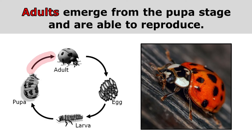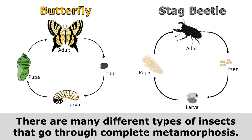Adults emerge from the pupa stage and are able to reproduce, and that starts the cycle all over again. There are many different types of insects that go through complete metamorphosis. Even though the butterfly and the stag beetle look very different, they go through very similar stages: the adult lays eggs, the eggs hatch into larvae, the larvae go through a pupa stage, and then an adult emerges from the pupa.